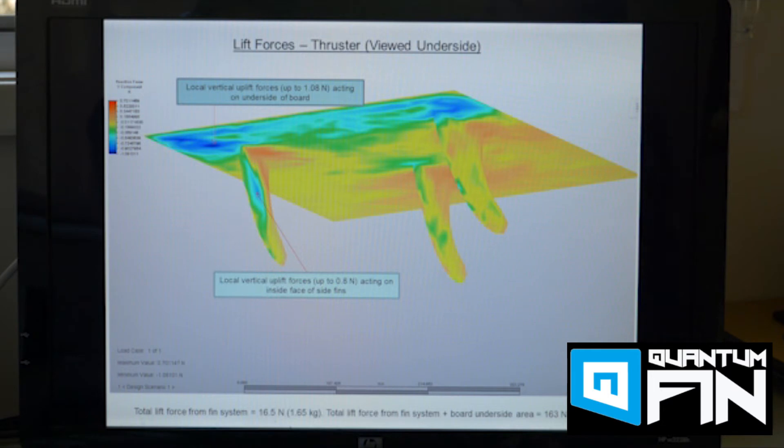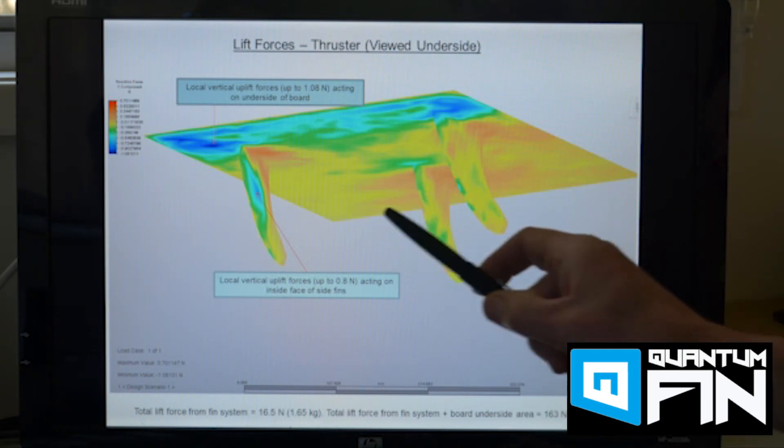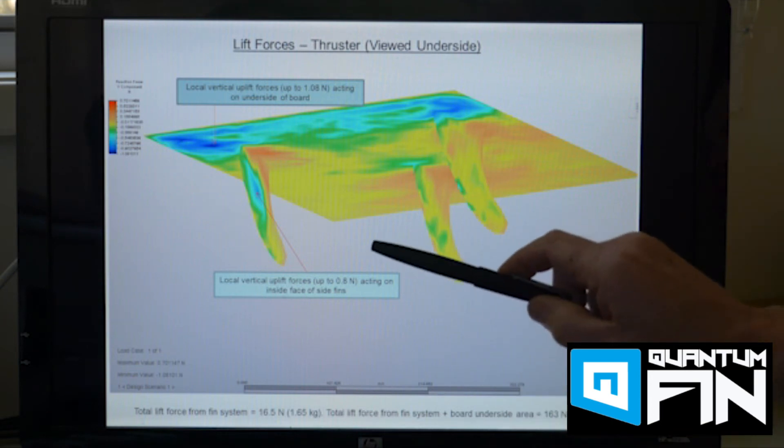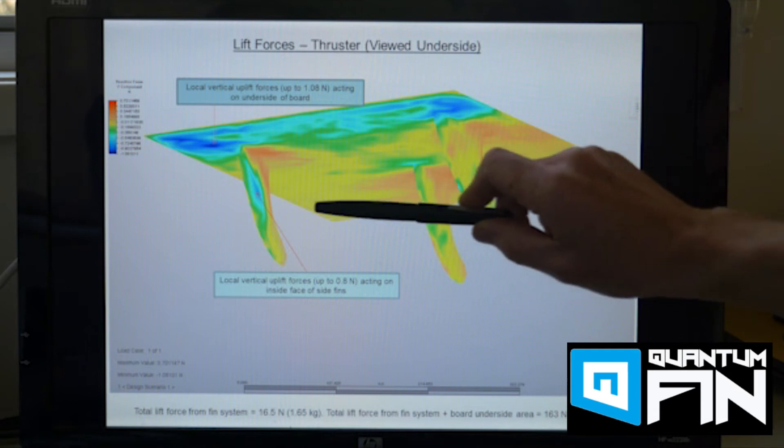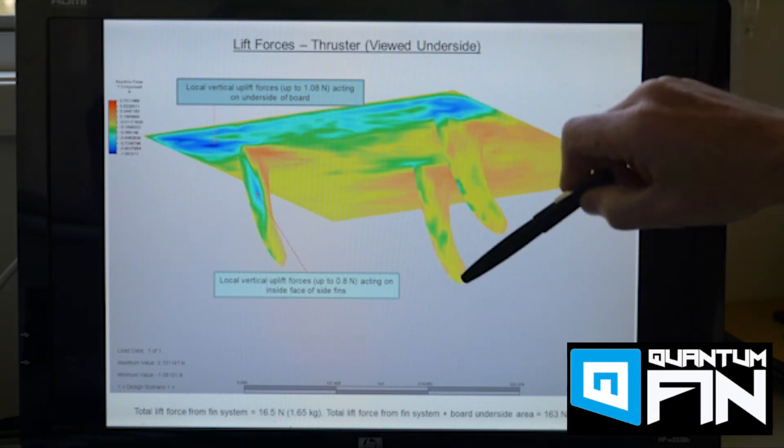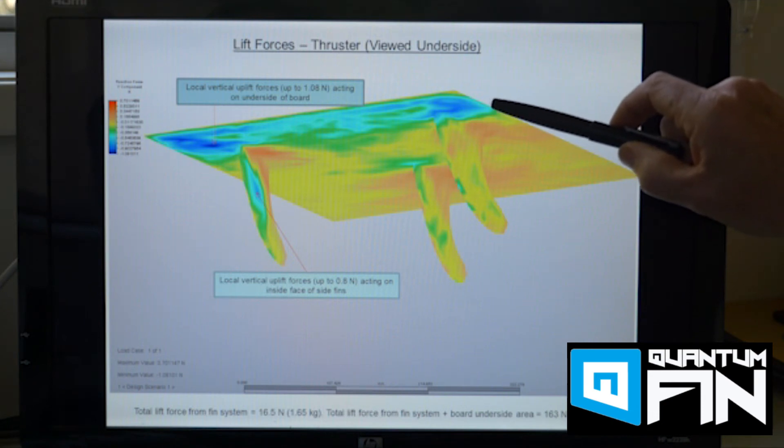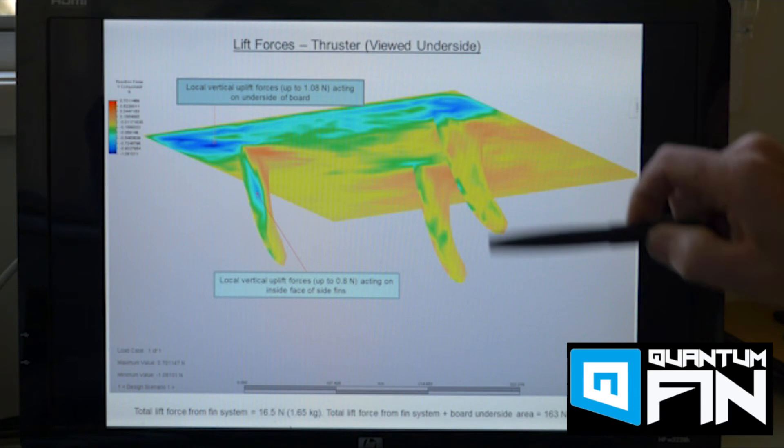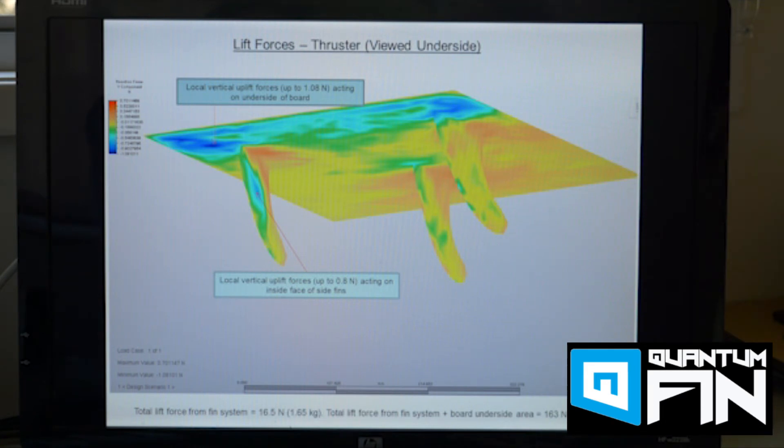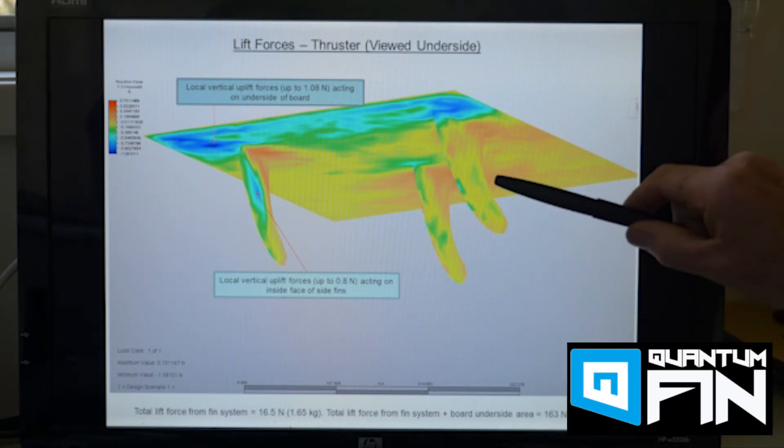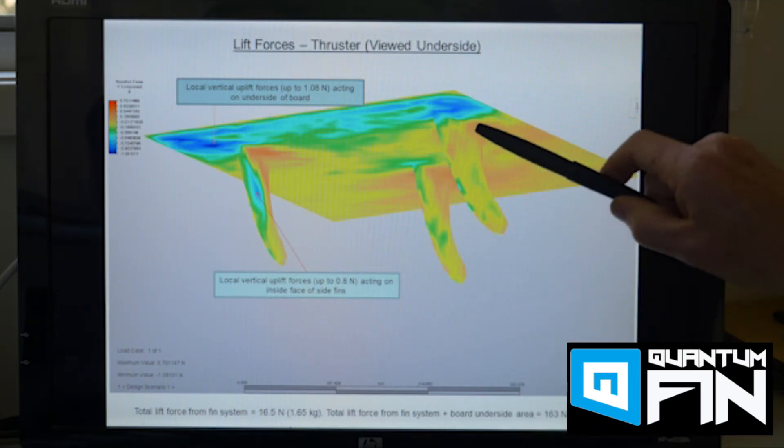And these different colors here show the vertical forces which are acting on the underside of the board. So this flat area here is a section of the underside of the board and also the vertical forces which are acting on the side fins for the thruster setup and the central fin as well. And these different colors on the plot relate to different amounts of force which are generated in different areas. And by summing all of these different forces together we can work out exactly how much uplift force is acting on the board itself. And we can do the same thing in analyzing the drag of the board as well.